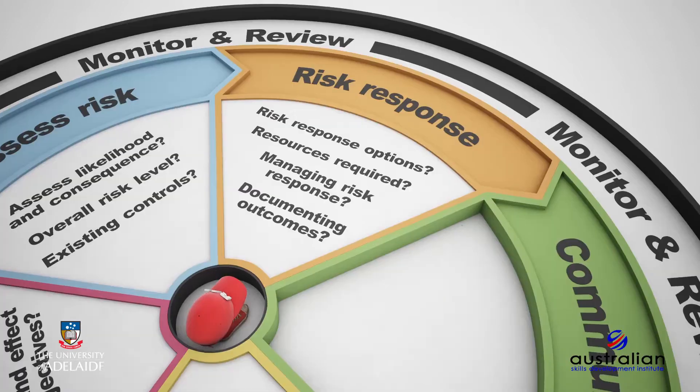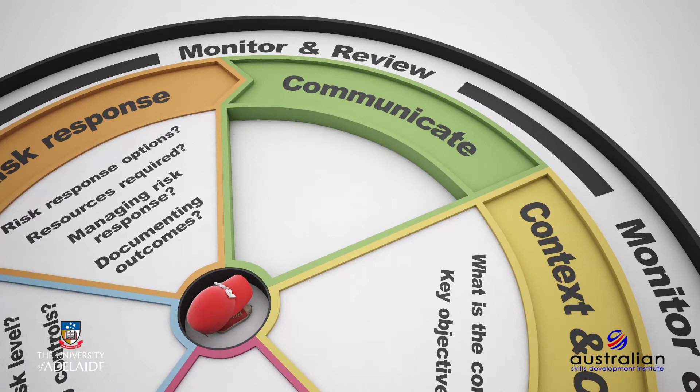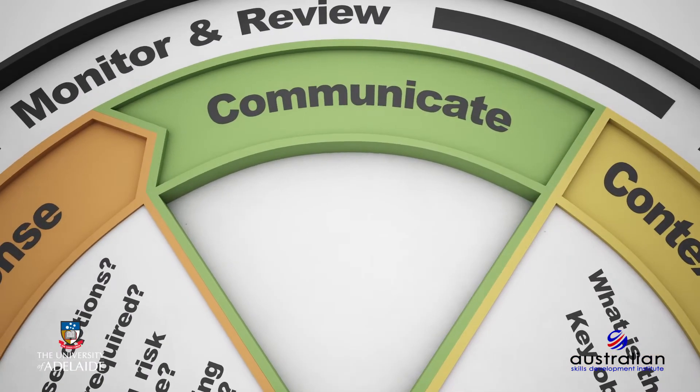Now that we have identified, assessed and developed a risk response, we need to communicate our risk management strategy to the relevant project stakeholders. The next stage of the risk management process is communication. Communicating the identified risks, risk assessments and risk responses you developed in your risk register to the relevant stakeholders is the most important activity in executing a successful risk management strategy.